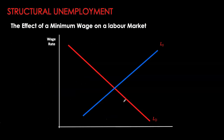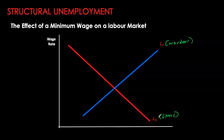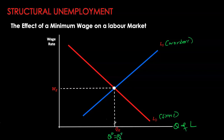We can use a basic demand-supply diagram to show structural unemployment. On the x-axis is quantity of labor. The labor demand curve is downward sloping, representing firms as employers — the lower the wage rate, the more workers firms are willing to hire. The labor supply curve is upward sloping, representing workers — higher wage rates induce more people to supply labor. The equilibrium is where the two curves intersect, giving the equilibrium wage rate and quantity. At equilibrium, quantity demanded equals quantity supplied, so anyone willing to work has a job.